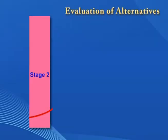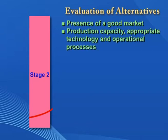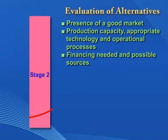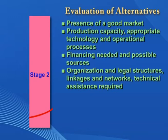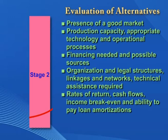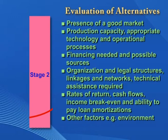The alternative options must be subjected to feasibility assessments. The useful aspects to be considered should include: one, the presence of a good market; two, the production capacity of the enterprise and the appropriate technology and operational processes to be used; three, the amount of financing needed and the possible sources of financing; four, the organization and legal structures to be adopted, linkages and networks formed, and technical assistance required; five, the expected rates of returns, cash flows, income break-even points, and ability to pay for loan amortizations, if any; and six, other factors such as the environment.